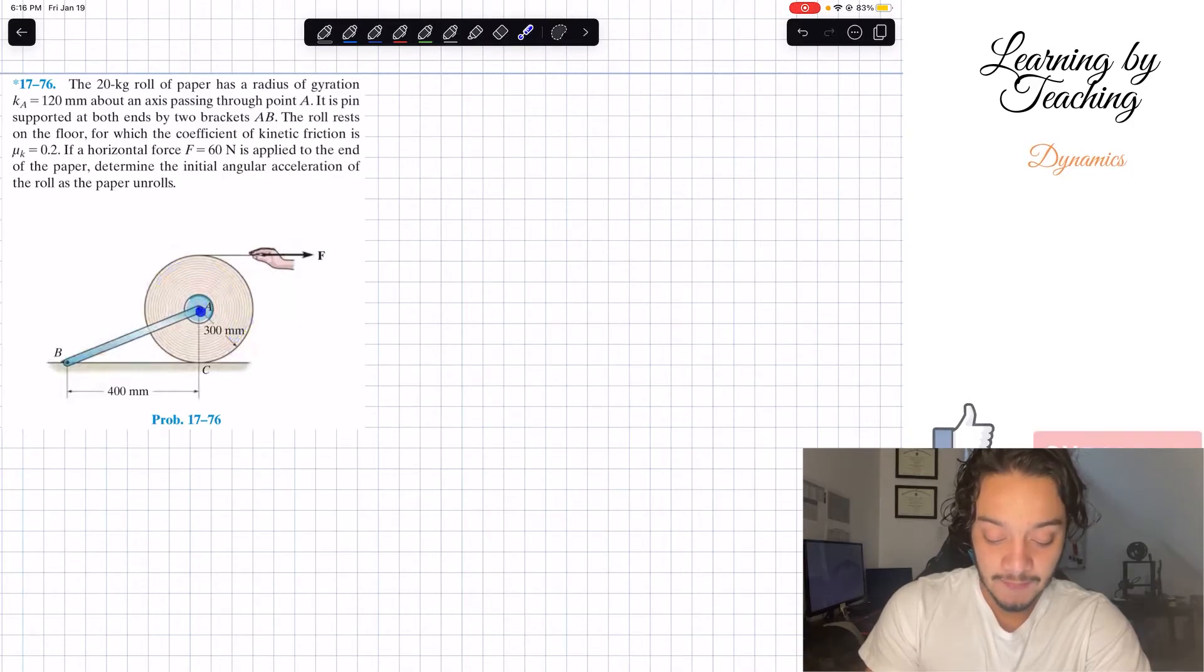So what do we have here? We have our paper that's 20 kg and we're basically forcing it by 60 newtons. My paper will want to rotate about this axis. My axis is A and we're trying to find the angular acceleration.